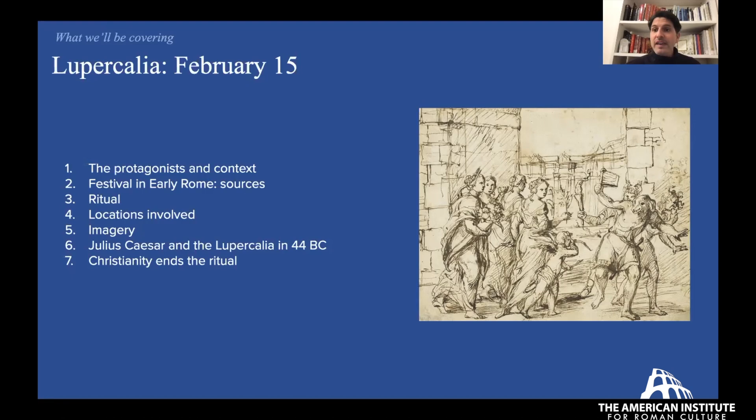Then the most famous case from antiquity: the moment in which Julius Caesar is involved, and he uses it as a staging moment to push his special status in Rome as a would-be king in 44 BC. Remember the Ides of March are around the corner — he's going to be dead on the 15th of March. This is just one month before.